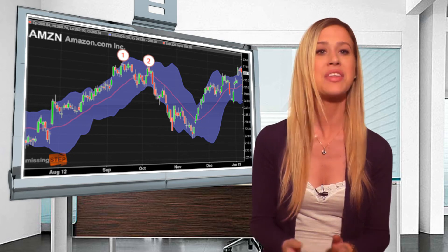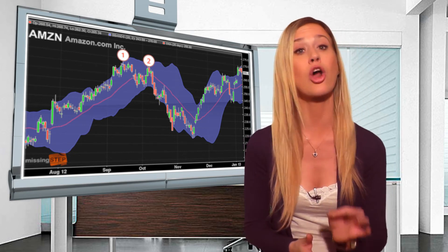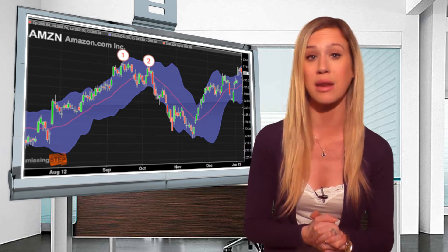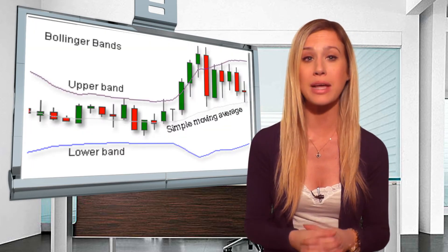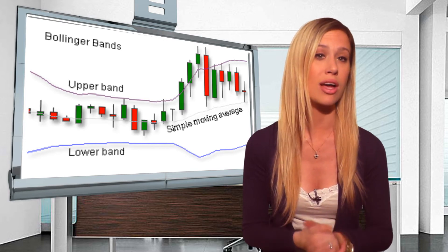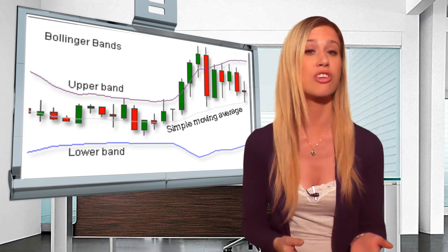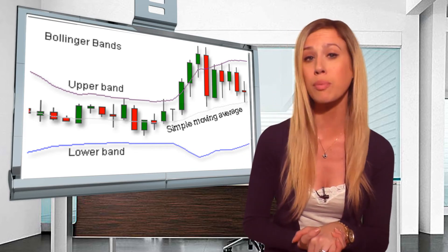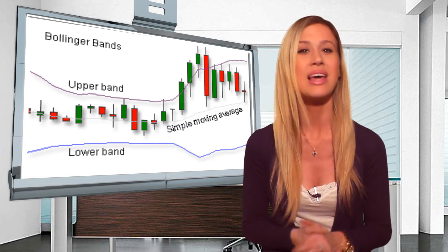Looking at the bands, you can be pretty sure that all of the data for pricing can be found between the two bands. The Bollinger Bands are made up of a center line and two price channels — one channel above the center line and another price channel below the center line.